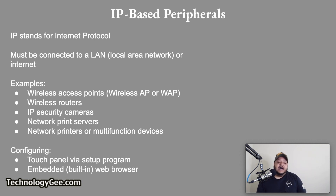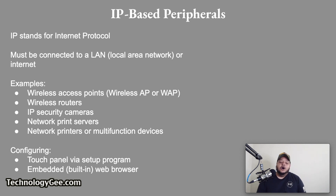Examples of IP based peripherals are wireless access points, wireless routers, IP security cameras, network print servers, network printers, or other multifunction devices. Depending upon the device, configuring it for an IP connection might be performed through a touch panel, via a setup program, or via the device's embedded web browser. Devices that are managed through an embedded web browser are using web-based configuration.